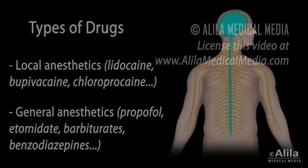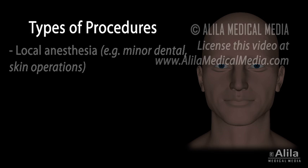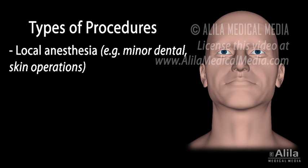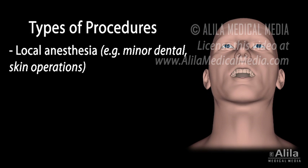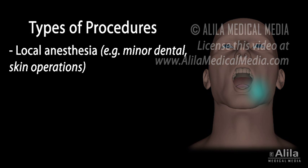There are three major categories of anesthesia procedures. Local anesthesia – a local anesthetic is administered directly to the site of procedure to numb a small area, such as a tooth during a dental manipulation.